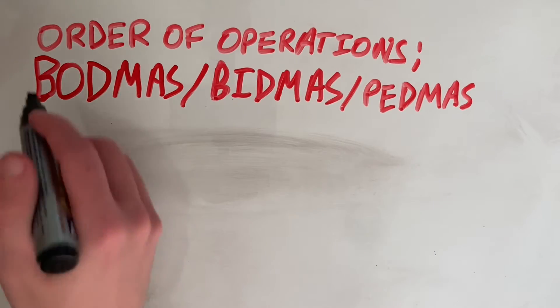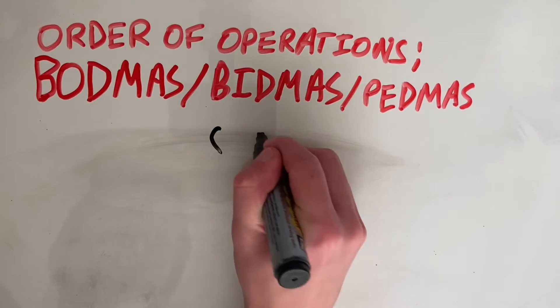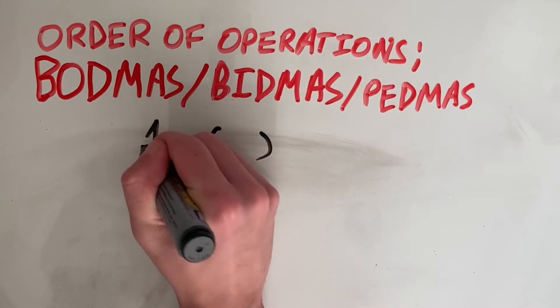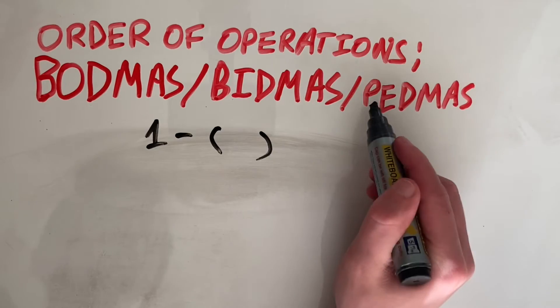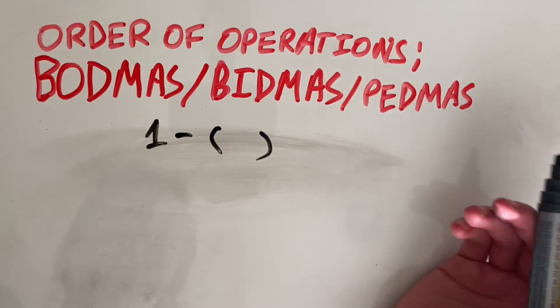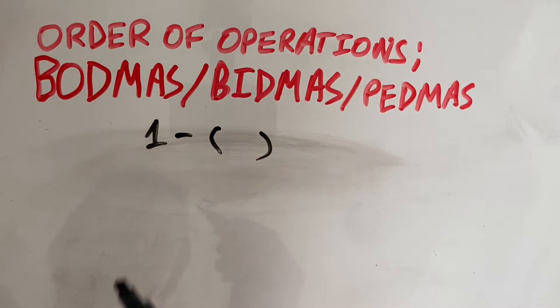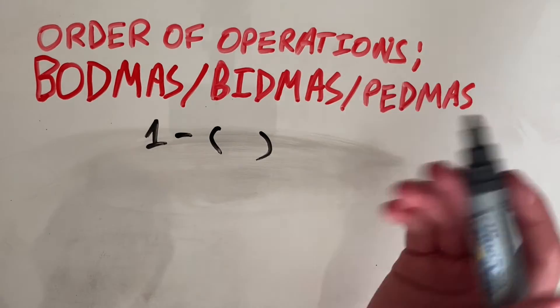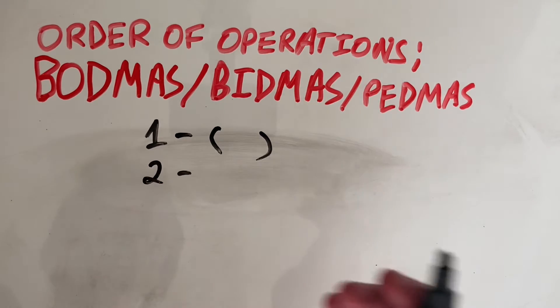So for example, BODMAS, the B stands for brackets. So anything in brackets is always going to be the first thing we do. Or here in PEDMAS, the P just stands for parentheses. So same thing. And then we have O, which stands for order, or I indices, or E exponents. They all essentially mean to the power of.